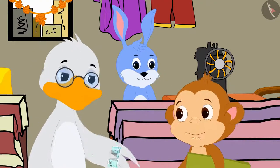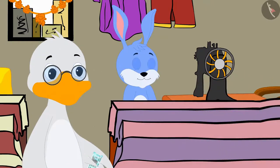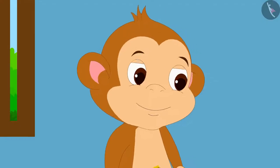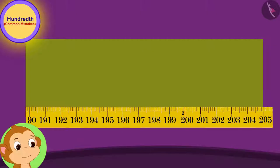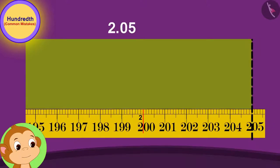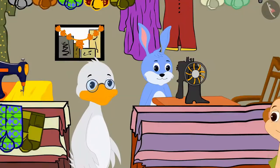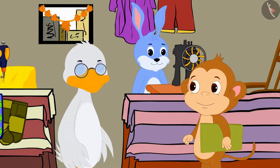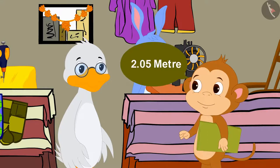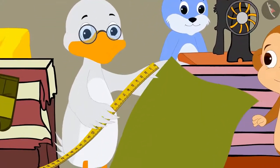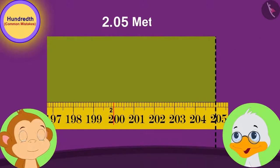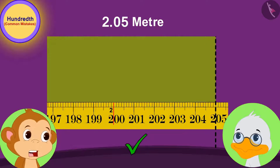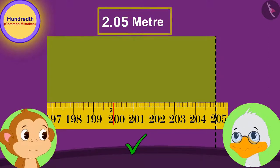Babban paid the money for the cloth to uncle and returned home. On returning home, when Babban measured the cloth with his tape, he found that the length of the cloth was 2.05 meters. He immediately reached uncle's shop. When he told this to uncle, uncle once again measured that cloth with his tape and found that Babban was right — the length of the cloth was actually 2.05 meters.